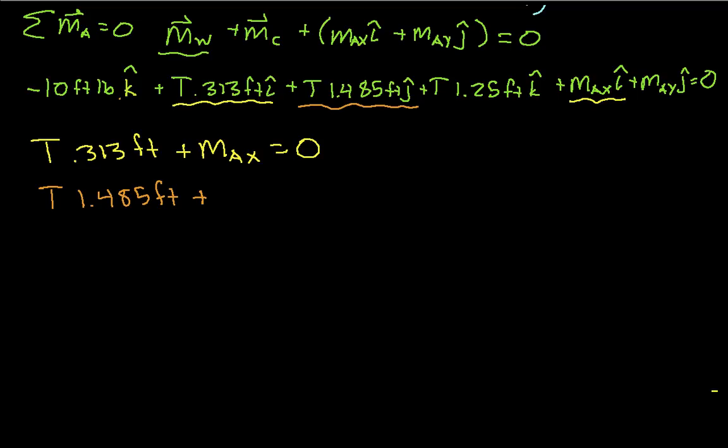We were at the point where we were looking at the moments in the y-direction, and we had taken this guy, put it down here, plus we have mAy j-hat, so we have mAy is equal to 0.